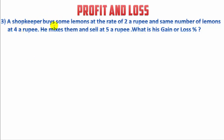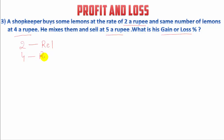Now the third question: a shopkeeper buys some lemons at the rate of 2 for a rupee and the same number of lemons at 4 for a rupee. He mixes them and sells at 5 for a rupee. We have to find what is his gain or loss percentage. The shopkeeper first buys 2 lemons for a rupee from one shop, then buys 4 lemons from another shop, mixes them, and sells at 5 for a rupee.